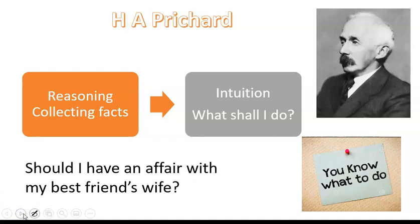So if someone came to you and said, 'Should I have an affair with my best friend's wife?', you might use reason to think about who are the people in this scenario and what are the different obligations — to your best friend, and to his wife. There would be different people affected by the decision, and there might be other parties involved too. So you would reason who is affected, but then you would use intuition to decide whose need you're going to prioritise.